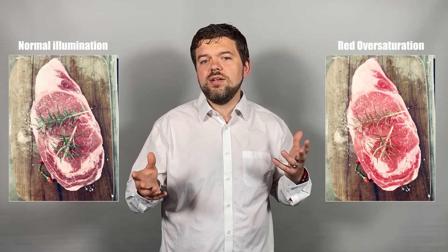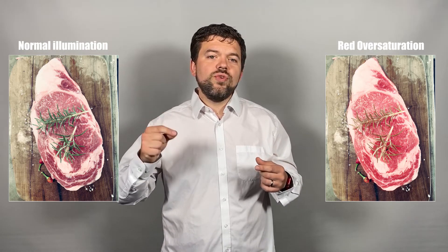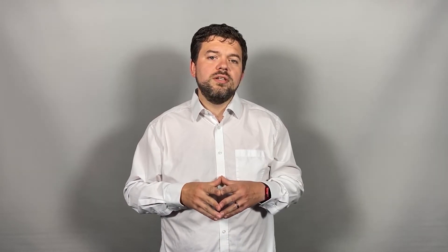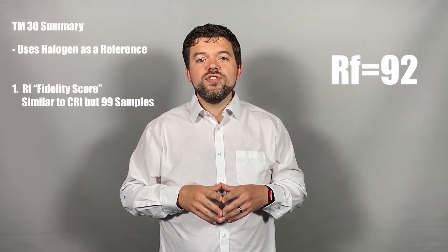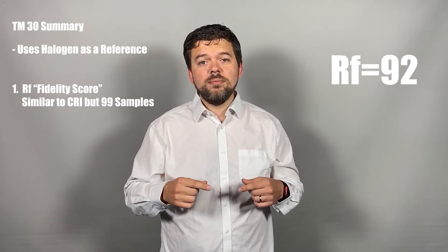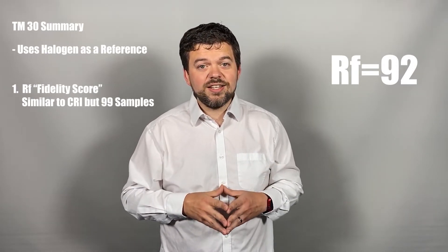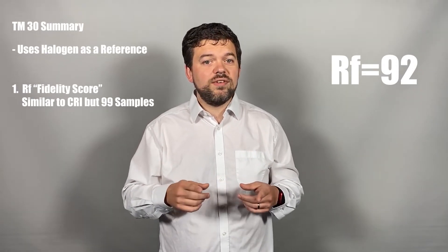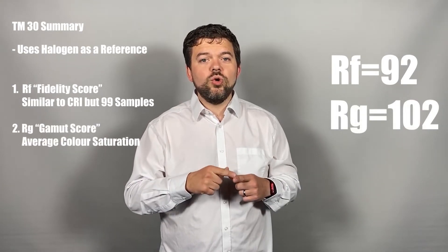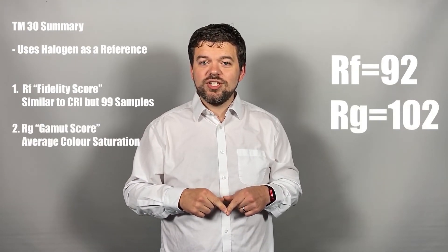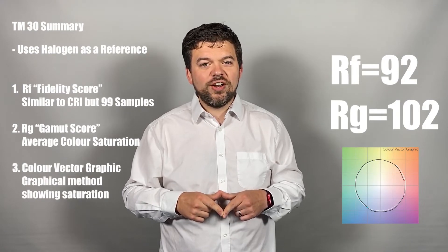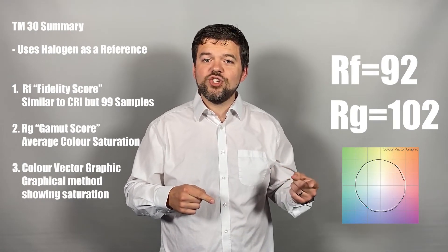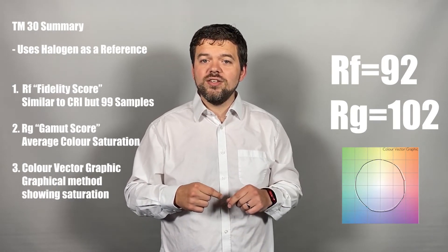A fresh meat counter stands out as one example, where saturating reds might be a preference. So in summary, TM30 can give you three measures of colour rendering quickly when referenced against halogen: an RF score, similar to CRI but with more detail using 99 colour samples instead of 8 or 15; an RG gamut score indicating average colour saturation; and lastly a colour vector graphic showing under- or over-saturation levels of colours.